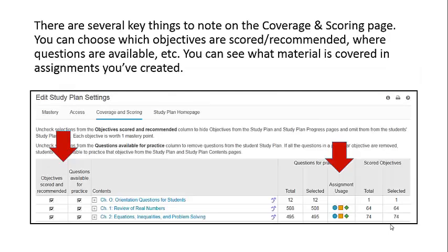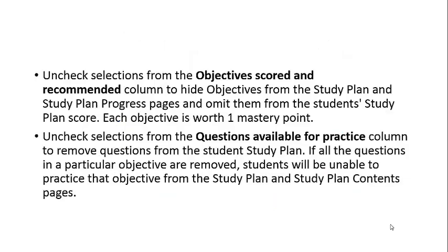There are several key things to note on the Coverage and Scoring page. You can choose which objectives are scored and recommended, where questions are available, and more. You can also see what material is covered in assignments you have created. You can uncheck selections from the Objectives Scored and Recommended column to hide objectives from the study plan and omit them from the student study plan score. Each objective is worth one mastery point.